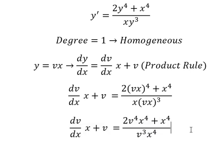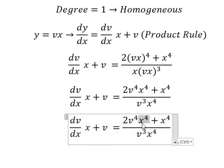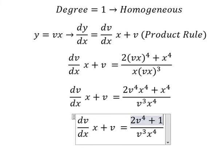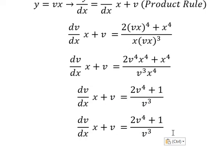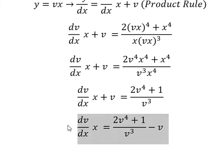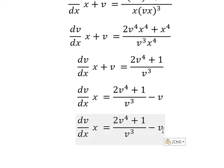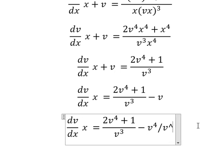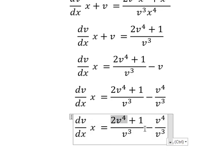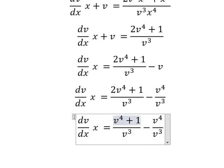And now we need to simplify x to the power of 4 in numerator and denominator. So I will put v to the right. And now this one we can do common denominator. So this one minus this one we have v to the power of 4.